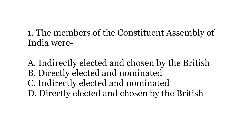Option A: indirectly elected and chosen by the British. Option B: directly elected and nominated. Option C: indirectly elected and nominated. Option D: directly elected and chosen by the British. The correct answer is C — indirectly elected and nominated.